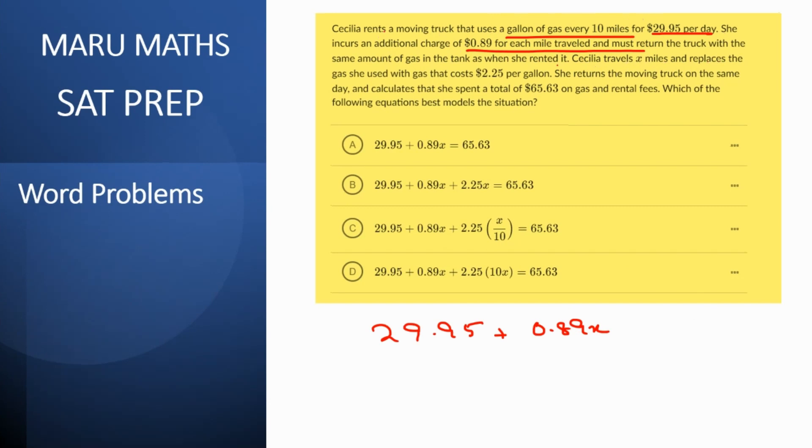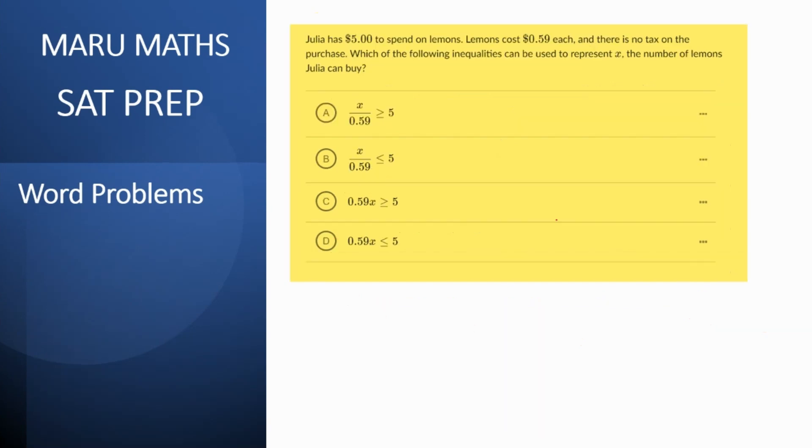So here she's traveling x miles and replaces the gas and the cost of the gas is 2.25 dollars per gallon. So if x is the amount of distance that she's traveling then x divided by 10 would be the amount of gas that she would buy and then this would get multiplied by 2.25 gallons and this would be her total cost. So let's look at these equations. This one's not considering the gas that she has to pay. This one's not considering the mileage of the car. So I think the right option should be C where it's considering both these things and that should be equal to 65.63 and that is the right answer.